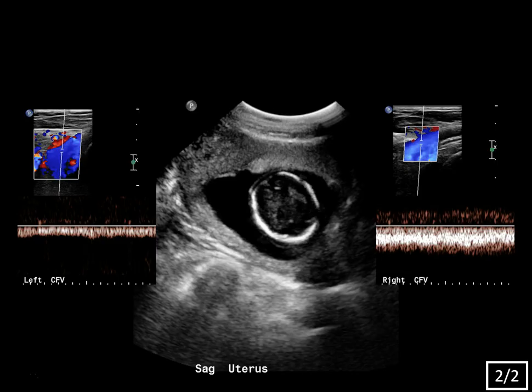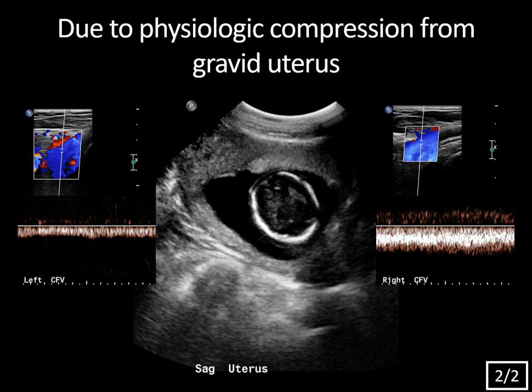In this case, the cause of the blunted waveform bilaterally was that the patient is pregnant — the gravid uterus was compressing upon the iliac veins. This is physiologic monophasicity of the common femoral veins.